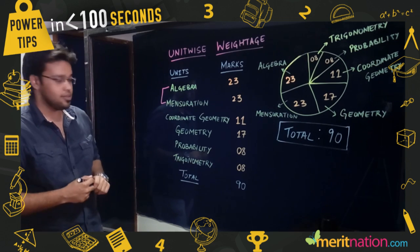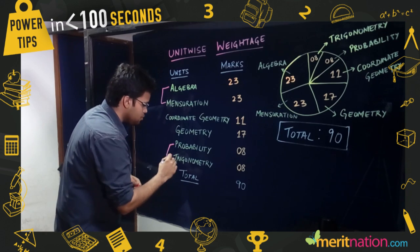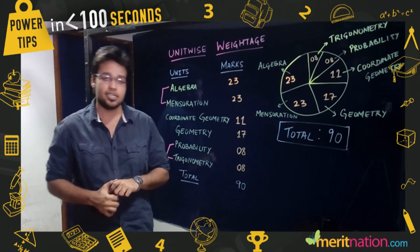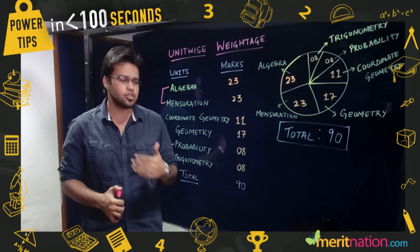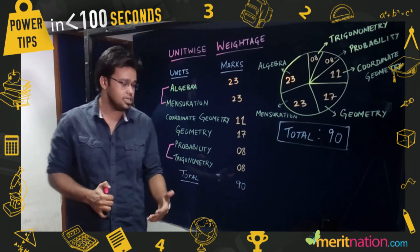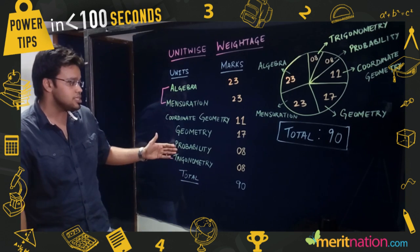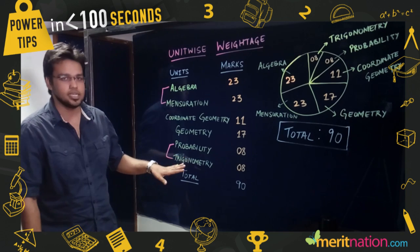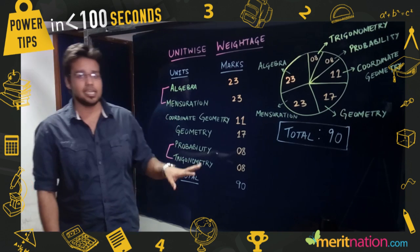Coming to probability and trigonometry, for these two units it has been seen for the past few years that questions either directly from NCERT or based on the same lines given in the NCERT are asked. So I would say for these two units, solely focus on NCERT.